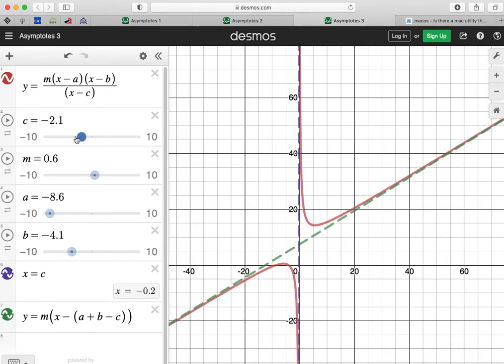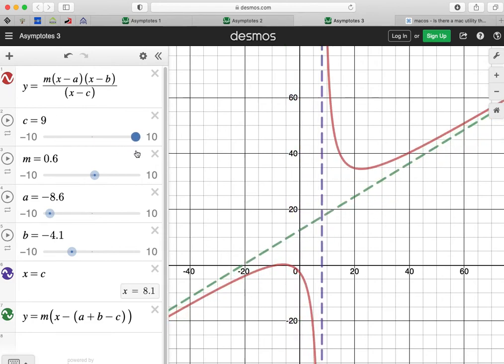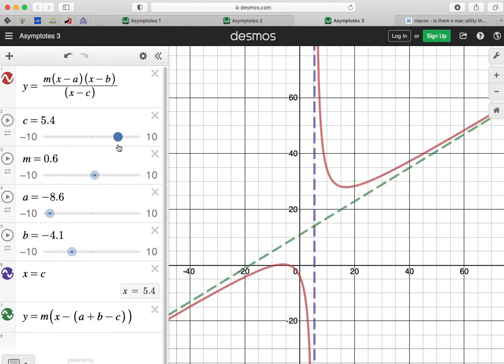And as we move c, of course, it's going to move the vertical asymptote left or right because that's the point where there's no y-coordinate because we can't calculate dividing by zero.